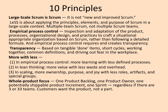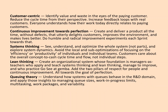The fourth principle is 'more with less' — in empirical process control, lean thinking, and in scaling. The fifth principle is whole product focus: one product backlog, one product owner, and one potentially shippable product increment per sprint, regardless of whether there are three or thirty-three teams.